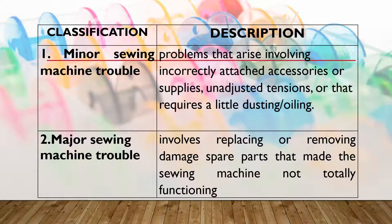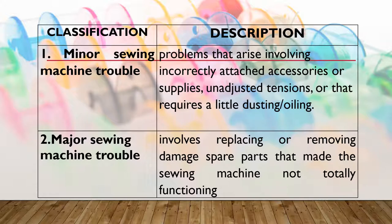Minor sewing machine troubles include incorrectly attached accessories and the need for dusting or oiling. On the other hand, major sewing machine trouble involves replacing or removing damaged spare parts that make the sewing machine not totally functioning. So if the sewing machine is not sewing, the spare parts or major parts may be damaged and need to be replaced or removed.